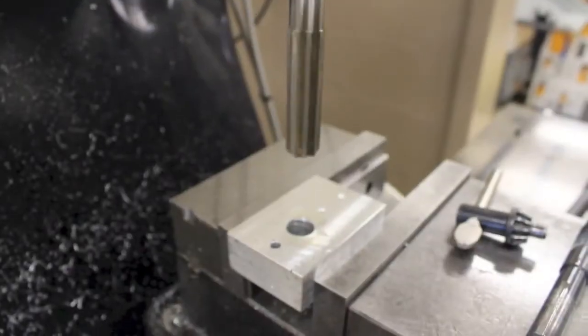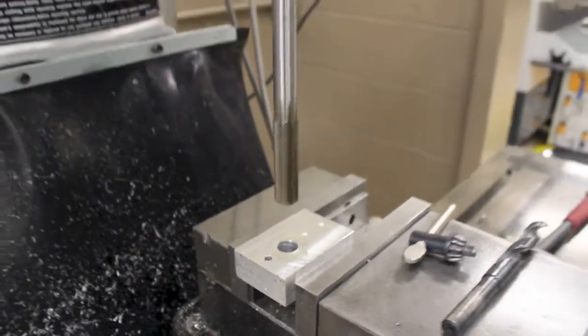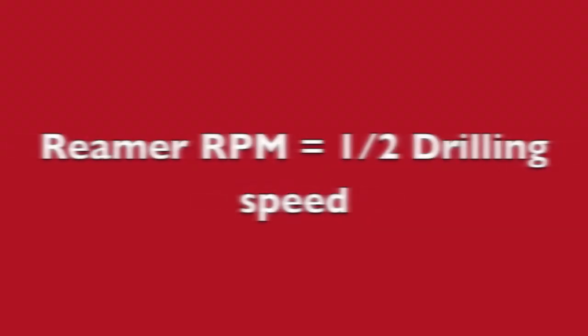Reamers are mounted in the milling machine spindle and are operated at approximately half the drilling speed, while feeding roughly two to three times faster than the drilling feed.